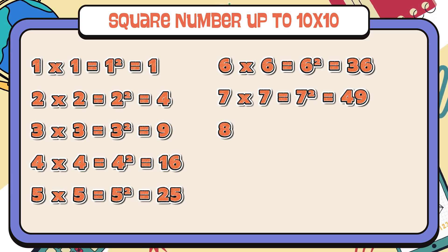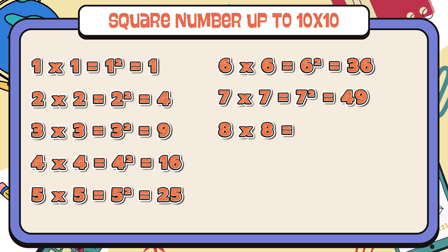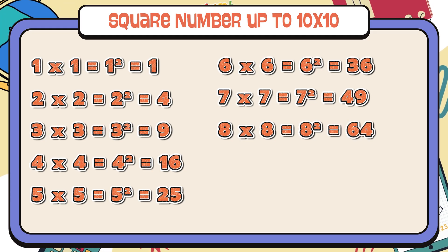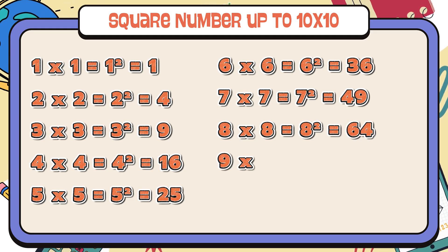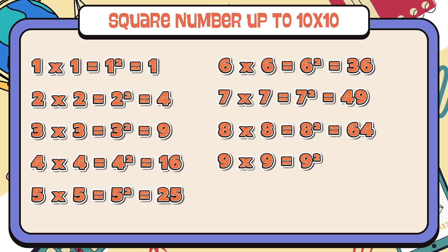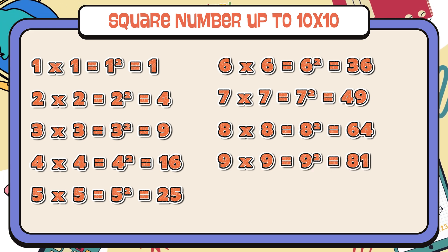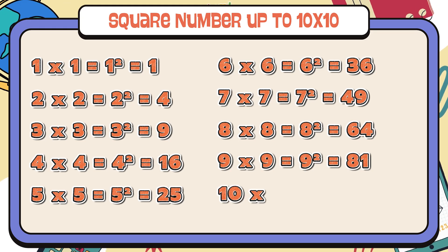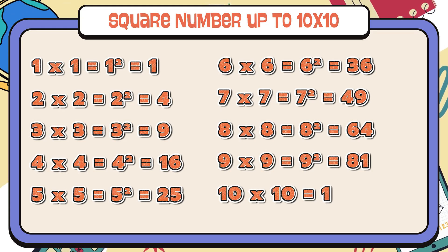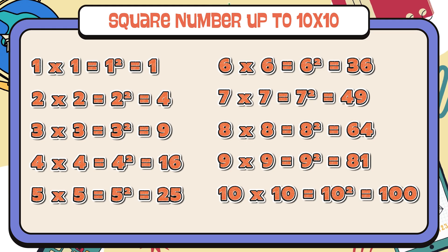8 times 8 is equals to 64, 8 squared is equals to 64. 9 times 9 is equals to 81, 9 squared is equals to 81. 10 times 10 is equals to 100, 10 squared is equals to 100.